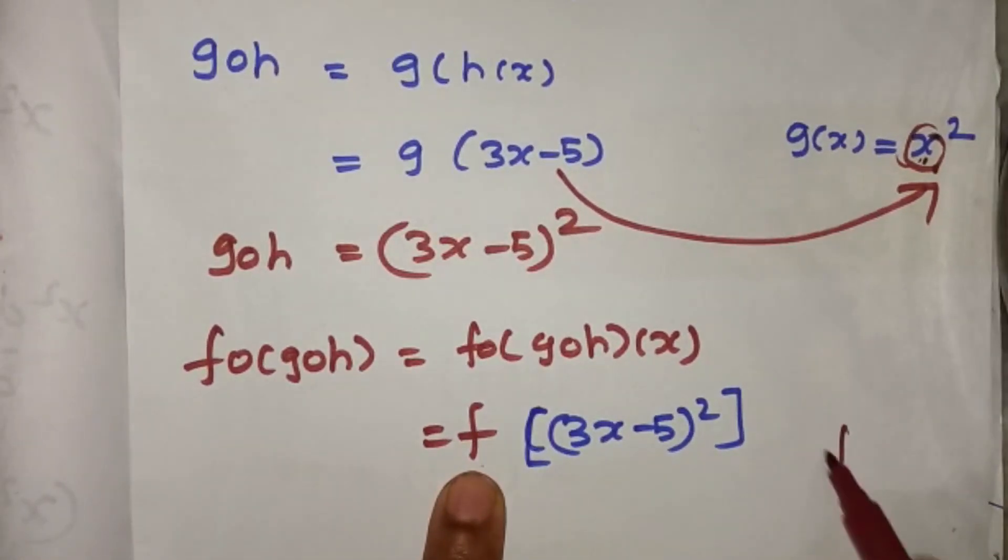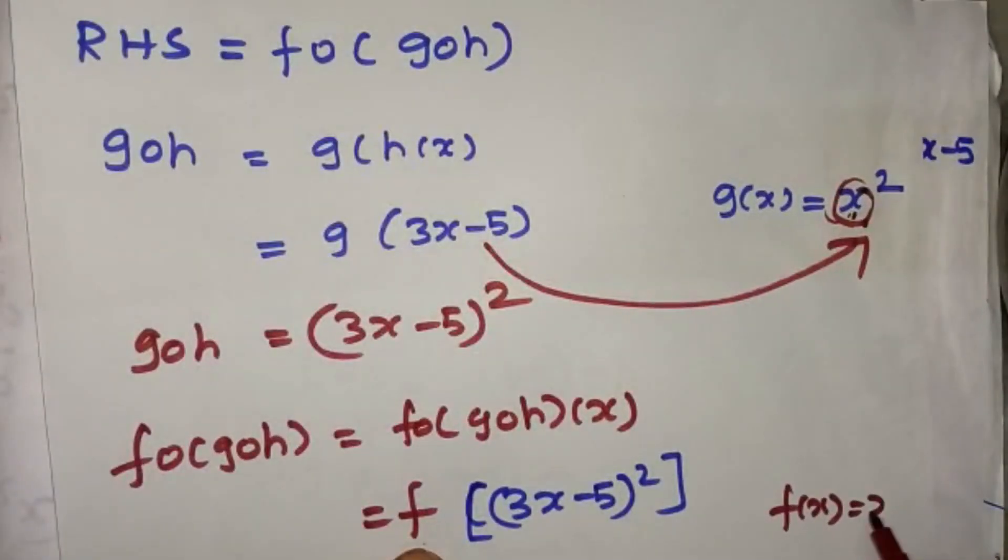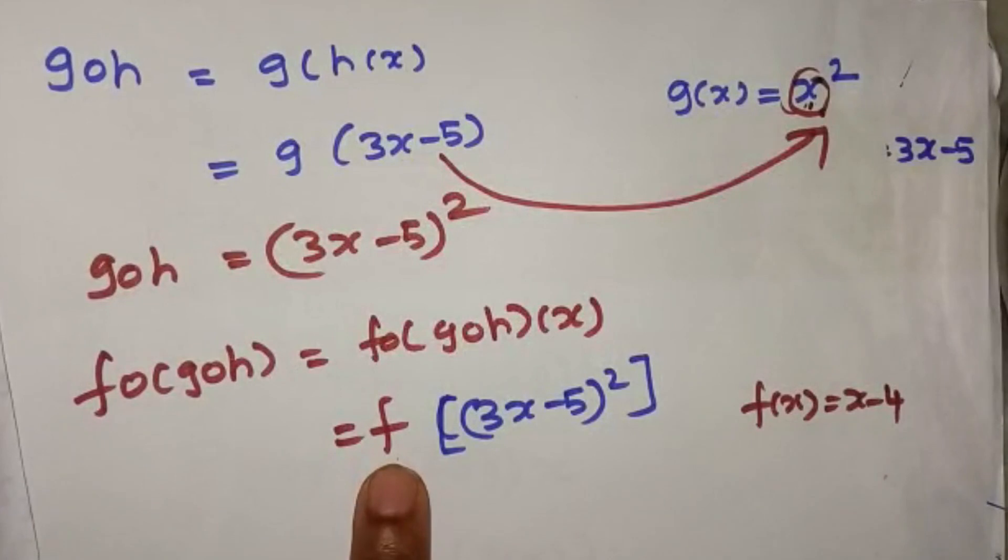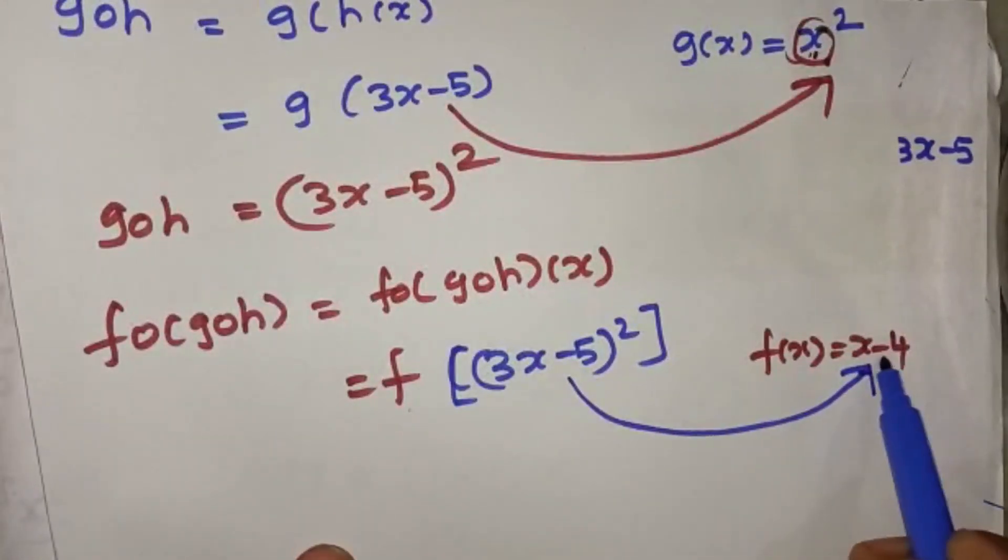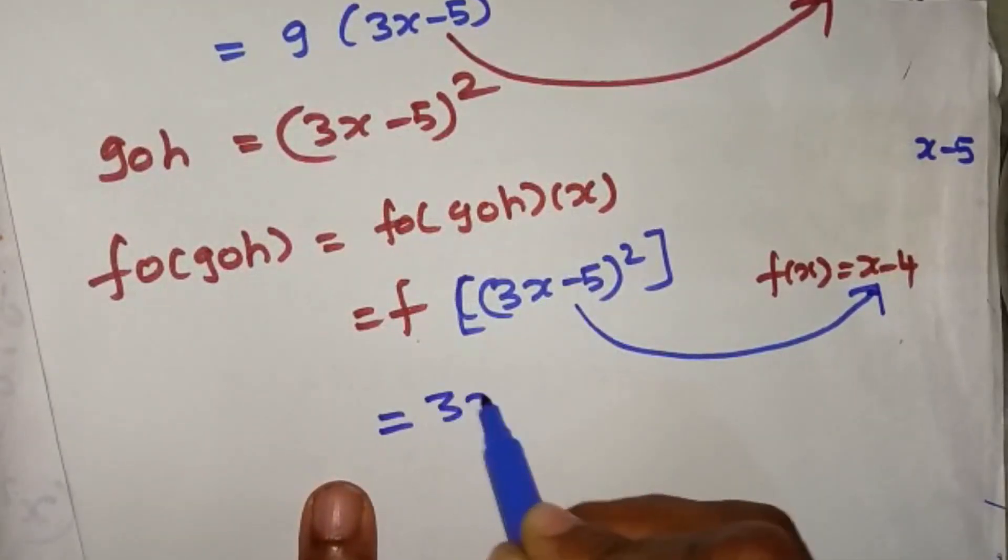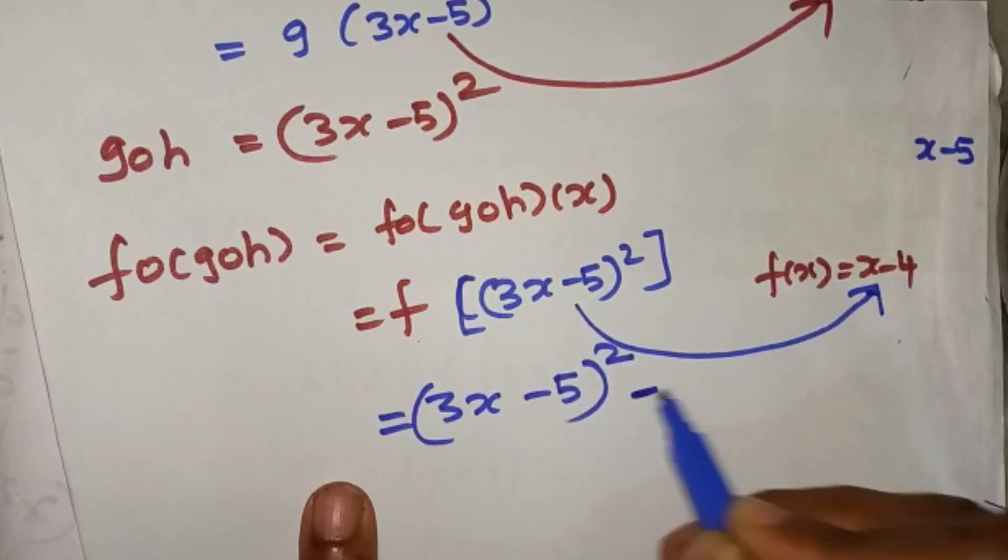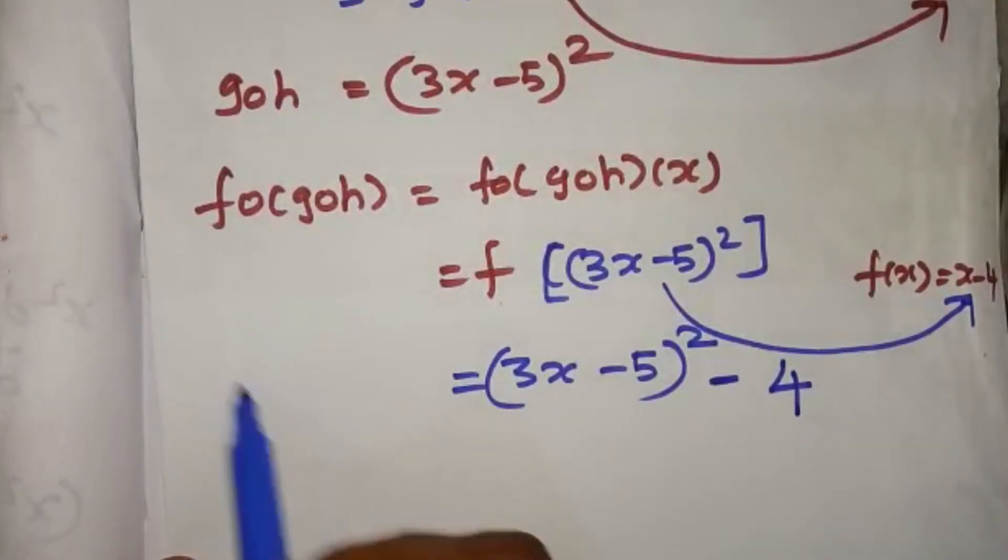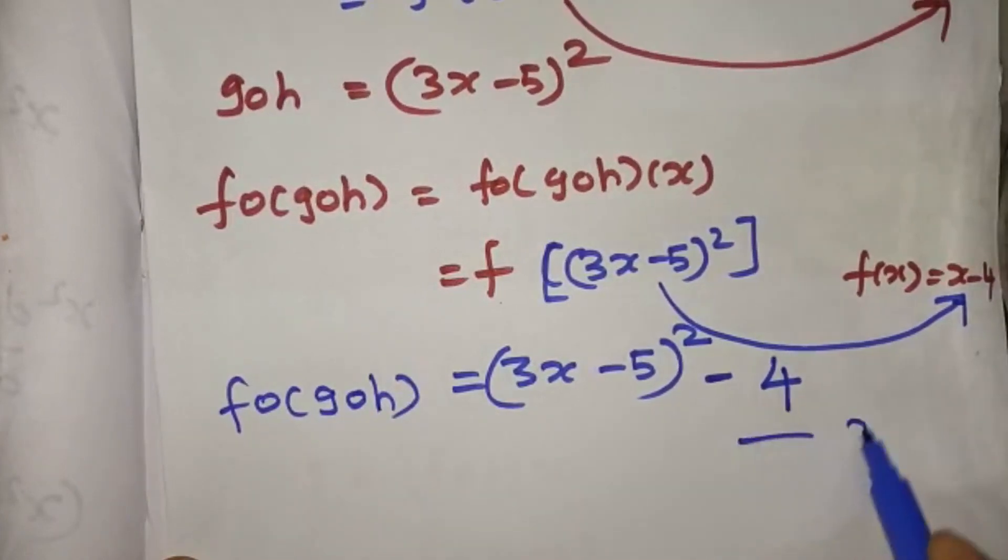f function is f of x equal to x minus 4. Now x, substitute for x. 3x minus 5 whole square minus 4. f of g of h.